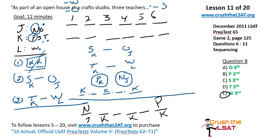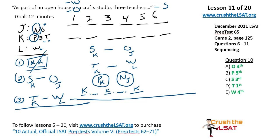Skipping question 9 for now since question 10 gives more details. Question 10: if N is 6th, which of the following must be true? N in slot 6 means NJ is there. No direct rules on N. The K rule means K's go in slots 1, 3, and 5. Again, SK must be followed by OJ, and TK must be followed by WL, but PK does not need to be. Therefore P must go in slot 5. That's the must-be-true deduction — answer B.